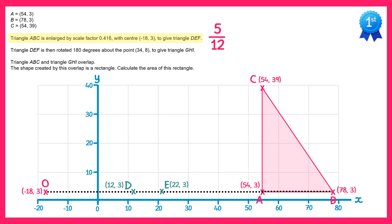Finally let's look at point C. Since point C is vertically above point A, we know point F will be vertically above D, so all we need to find is how high it goes. The vertical distance from A to C is 36. If we do 5 twelfths of this that gives us 15. So it's going to be 15 higher than point D. The y coordinate of point D is 3, and adding 15 gives 18. So point F would be at (12,18).